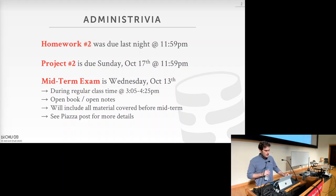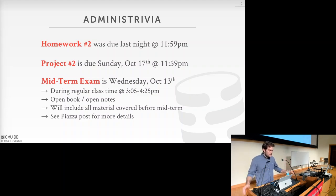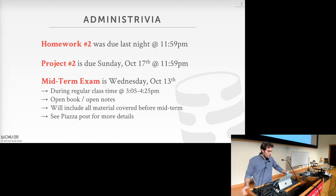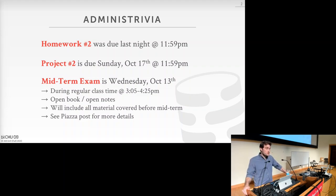Project number two is out, and it is due on Sunday, October 17th, at 11:59 p.m. It is the hash index project, and it's going to be due right after the midterm exam, so you want to prioritize your timing to make sure you can study for the midterm and get the project done. Just watch your scheduling on that. The midterm exam is scheduled for Wednesday, October 13th, during the regular class time, from 3:05 to 4:25 p.m. here in this room. It's going to be open book, open notes, so you're free to use whatever material you want to bring and use for the exam. Please try and be reasonable about it — don't print out every single slide from every single lecture. It will include all the material covered up to the midterm, all lectures and all assigned chapters from the book. You can see the Piazza post for more details.